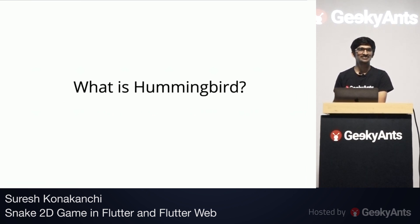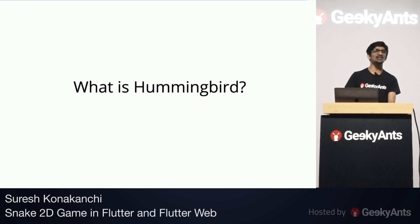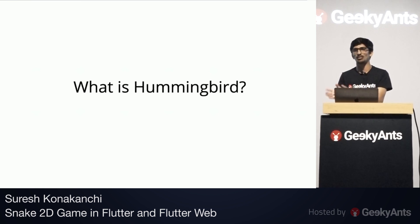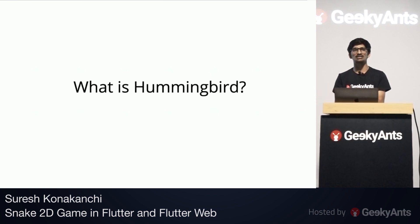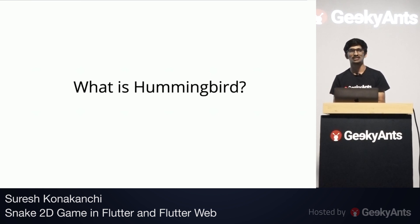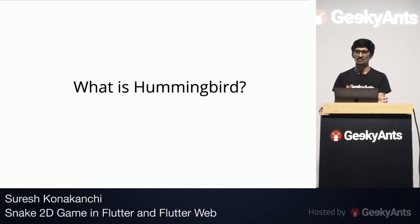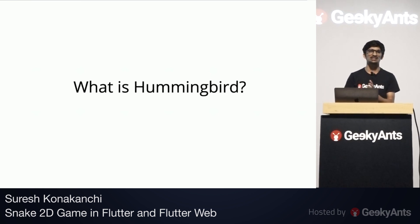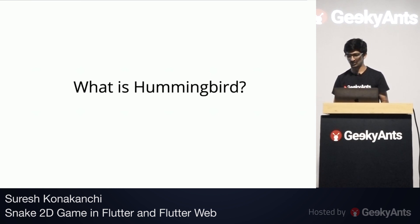What is Hummingbird? Hummingbird is the research done by the Flutter team. Flutter was initially released for mobile, but they thought it could be implemented for the web as well. Hummingbird is the concept — they experimented to run Flutter on the web using the same Dart programming language. It is not fully implemented yet; there are a lot of experimentations still going on. Hummingbird is also known as Flutter Web and it does not support all packages or APIs, and the processing is also very slow.